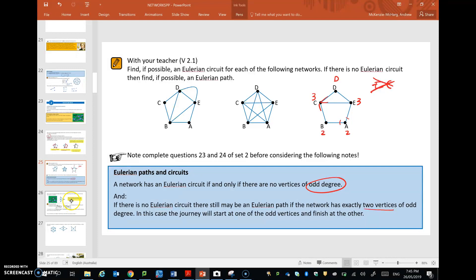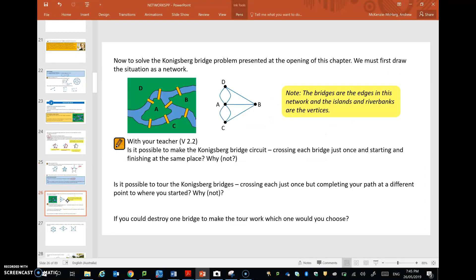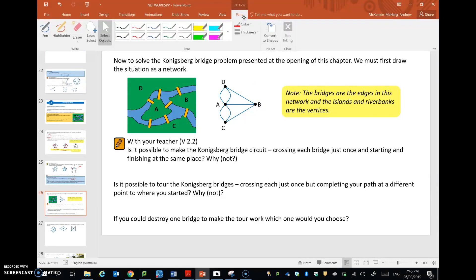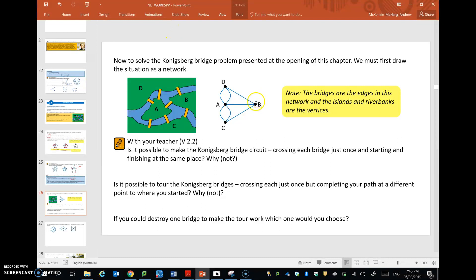So, if we look back at the Konigsberg bridge problem, we notice that B is odd, because it has a degree of 3, and so does C and D. So neither an Eulerian circuit nor an Eulerian path are possible.